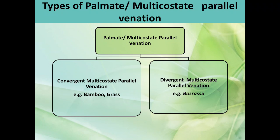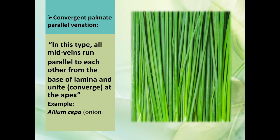Types of palmate multicostate parallel venation: there are two types — convergent multicostate parallel venation, for example in grass, and divergent multicostate parallel venation. In convergent parallel venation, all midveins run parallel to each other from the base of the lamina and unite or converge at the apex, for example in onion.